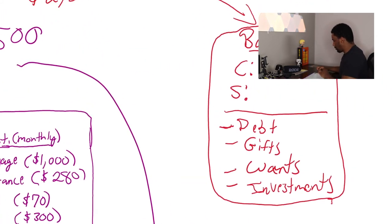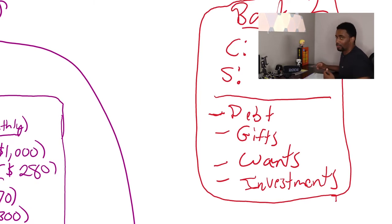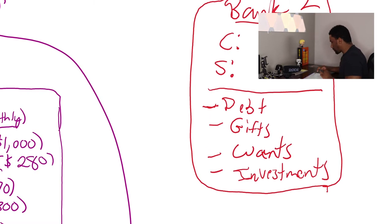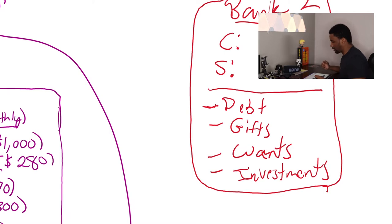And then also investments. So again, spouse number two, she pays her own debt. She pays for the gifts that she gets for her husband or for her kids. And then she pays for her wants. So if she wants to get her nails done or her hair done, then we have investments. Okay.